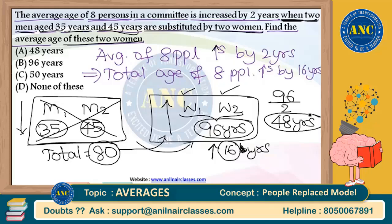Beautiful way of understanding by using the concept. Total age of 8 people will increase by 16 years. This scenario happens only when these 2 men aging 35 and 45, total of 80, go out and are replaced by 2 women.